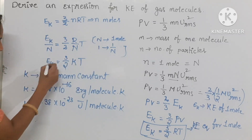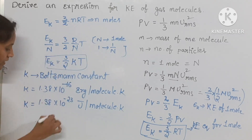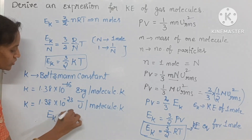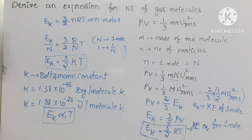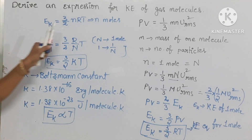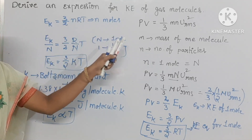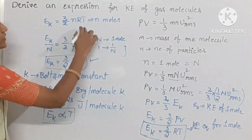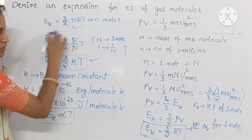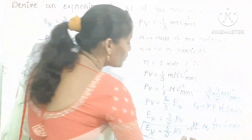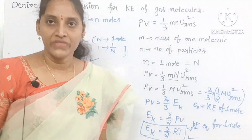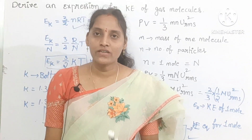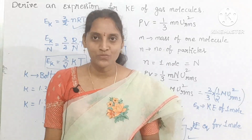From this equation you need to know one thing: E_K, kinetic energy, is directly proportional to temperature. This is also one more important relation. So expressions for kinetic energy of gas molecules: for 1 gas molecule use E_K = (3/2)kT; for N moles use E_K = (3/2)nRT; and for 1 mole use E_K = (3/2)RT. You can take a screenshot.